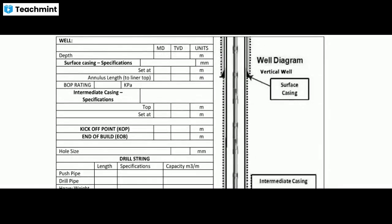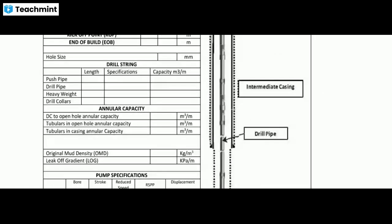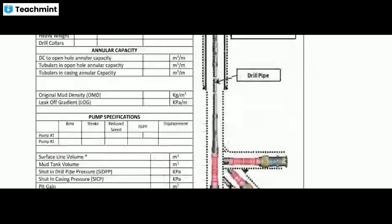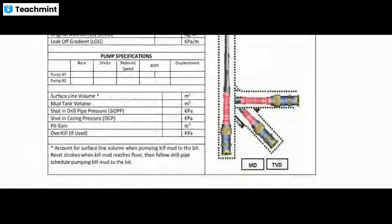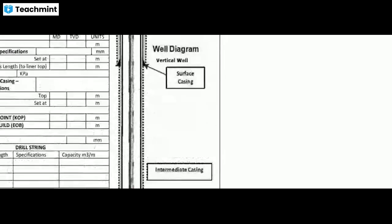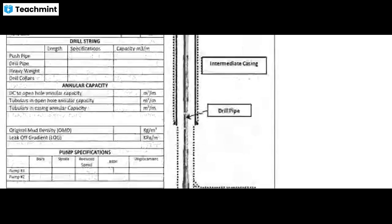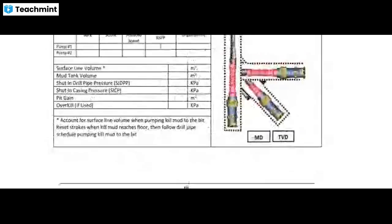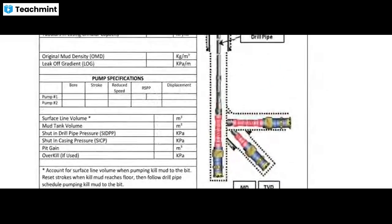You can see the blank well control sheet showing all data required: true vertical depth, intermediate casing, kickoff point, annular capacity, pump specifications. The diagram shows intermediate casing, surface casing, and a well diagram. Data includes mud tank volume, pit gain, overall kill pressure, shut-in casing pressure, and shut-in drill pipe pressure.